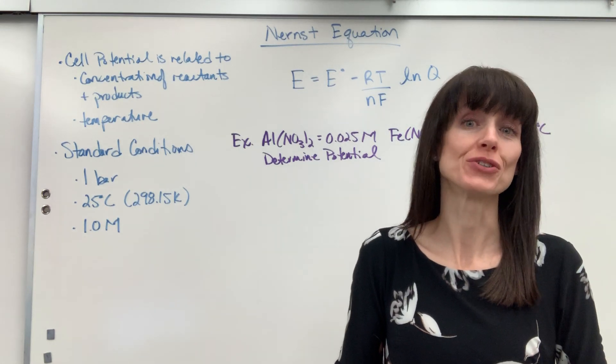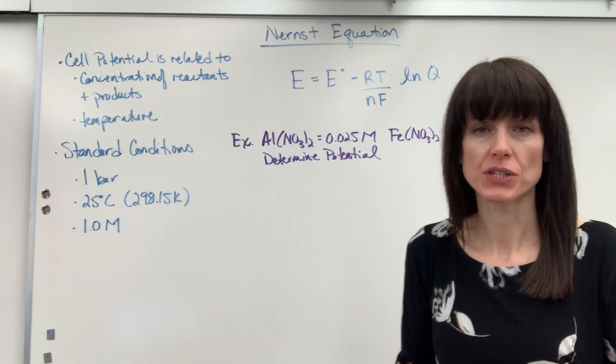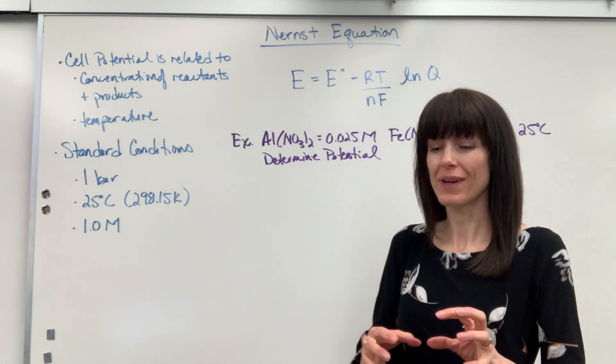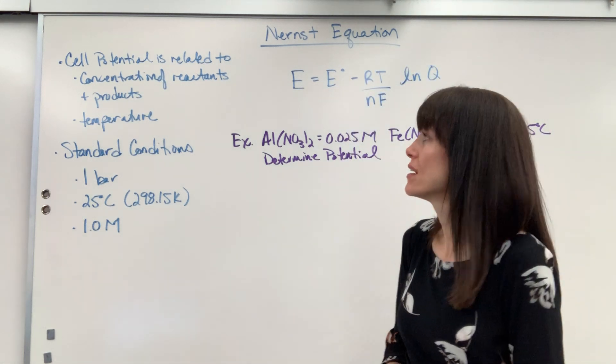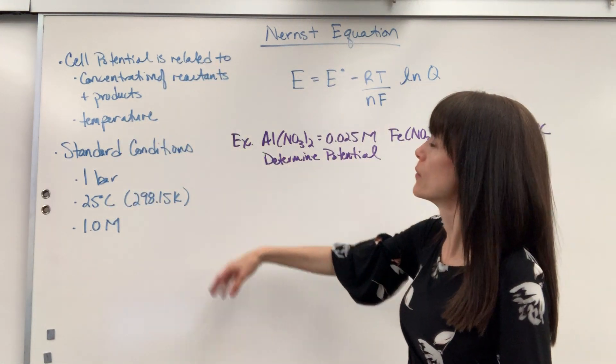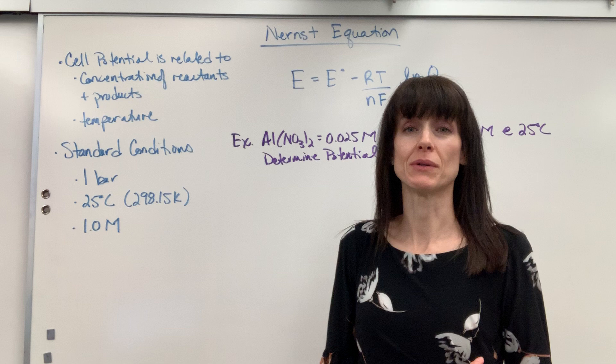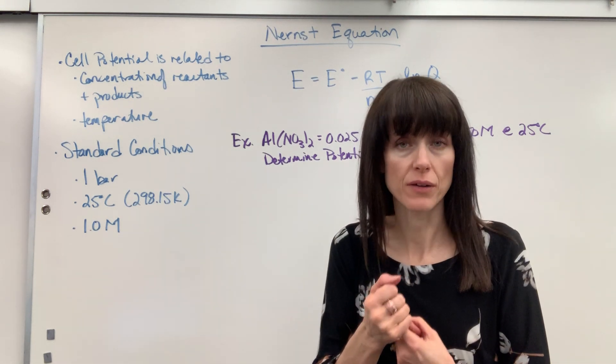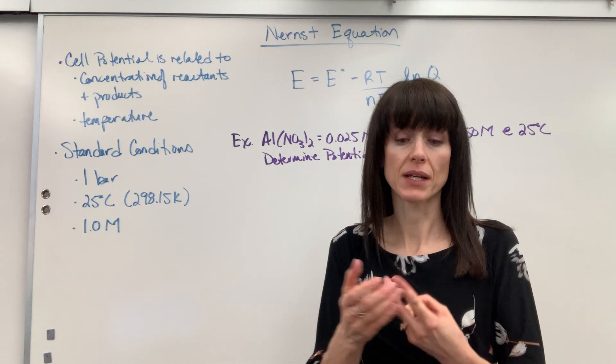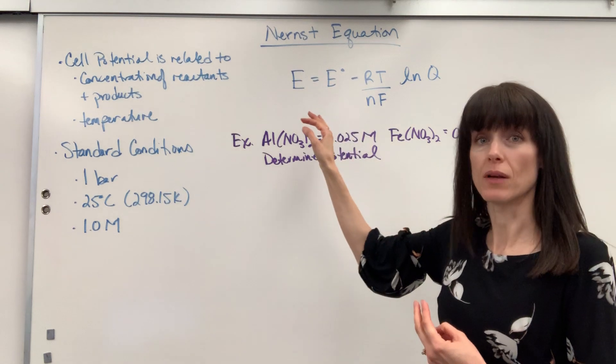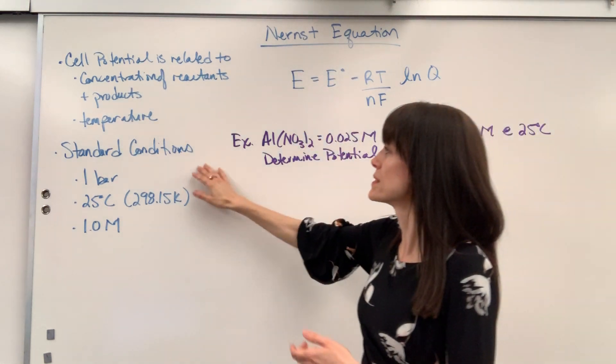Hi, I'm going to show you how to use the Nernst equation. The Nernst equation allows us to calculate the cell potential when we're at non-standard conditions. Let me give you a little bit of background as we begin. Remember that the cell potential is going to be related to two things: the concentrations of your reactants and products, and the temperature. Notice the Nernst equation is going to bring both of those items in.